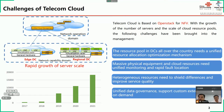Third, heterogeneous resources require a unified portal for operation and maintenance, to shield the differences and improve the service quality. The centralized management of telecom cloud makes it possible to manage the heterogeneity of resources such as physical machines, virtual machines, and containers. In the physical machines, x86 architecture and ARM architecture will also exist at the same time in the same resource pool. Fourth, we need to achieve unified data governance of multiple cloud platforms and support custom expansion and open on demand.